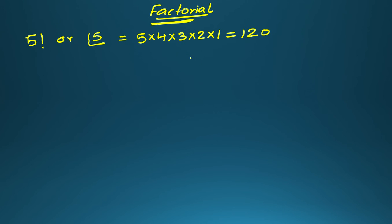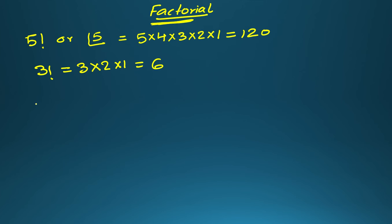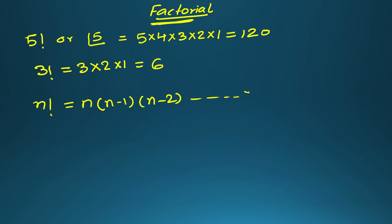This is how you can remember how to find the factorial. Similarly, factorial 3 means 3 × 2 × 1 = 6. In general, if n is any natural number, then factorial n equals n × (n−1) × (n−2) × ... × 3 × 2 × 1. This is the general expansion of factorial n.